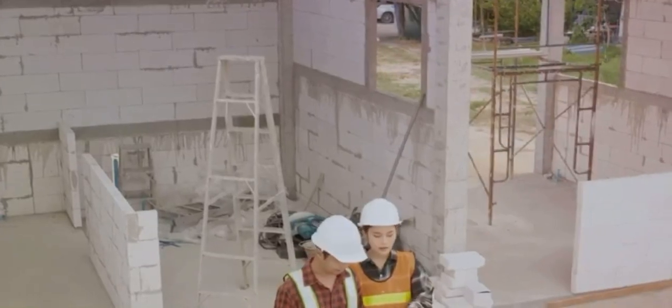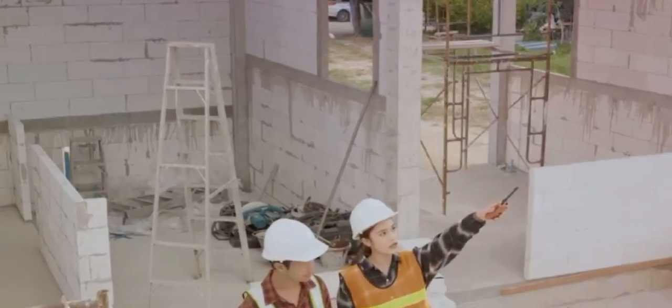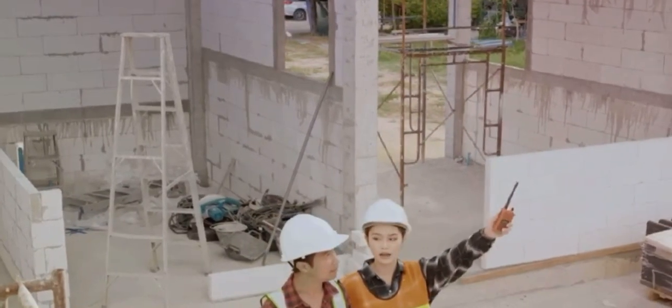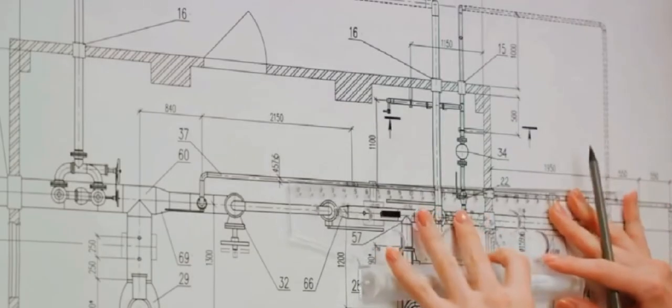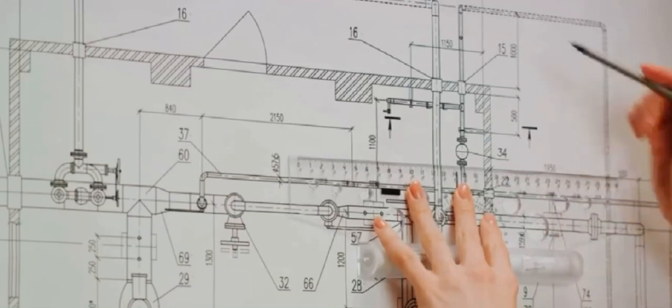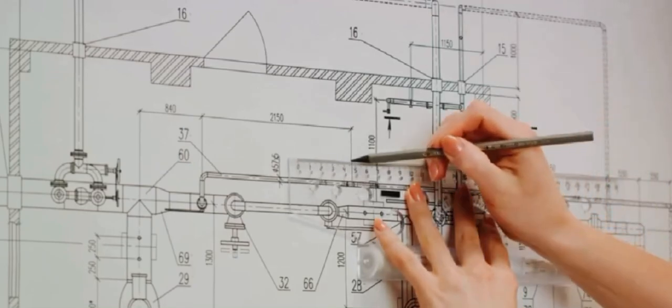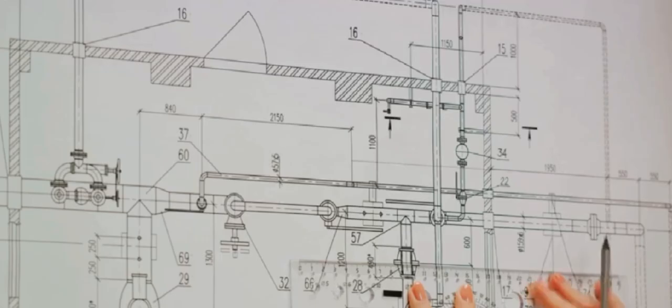Next comes the design development stage. Here, the architect refines the schematic design, adding more detail and starting to consider materials, textures and colors. The building structure begins to take shape.